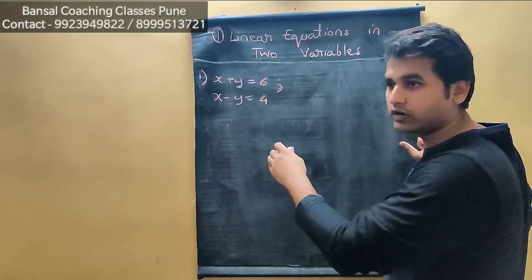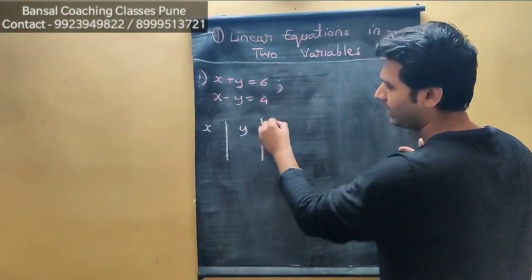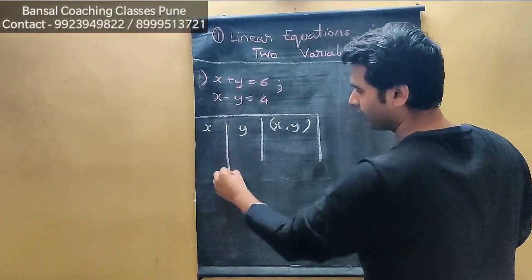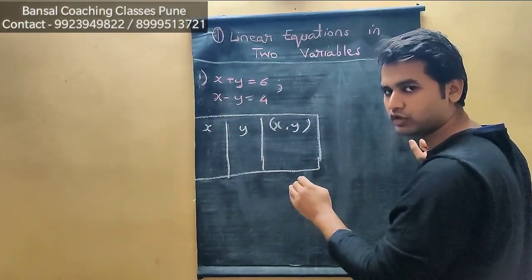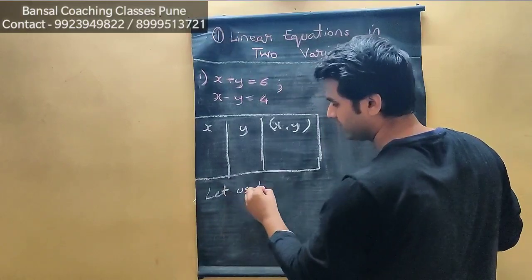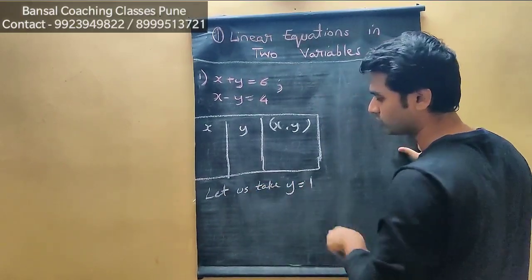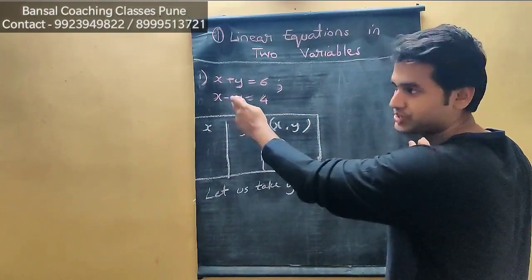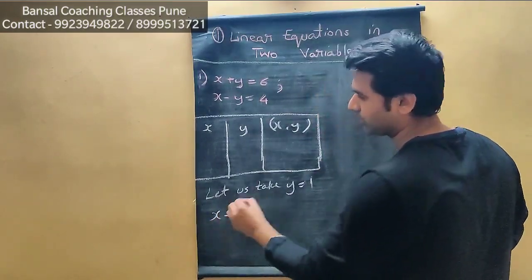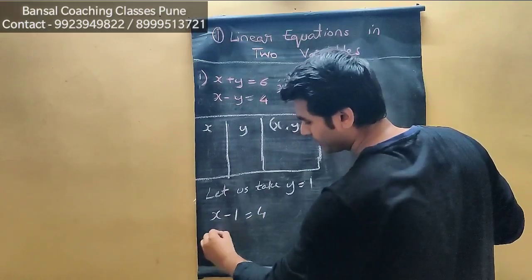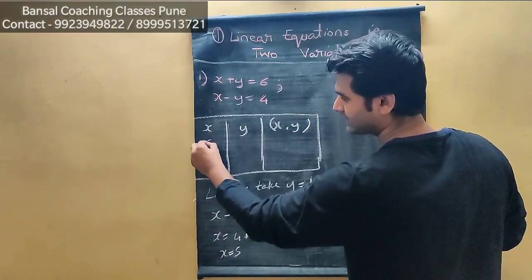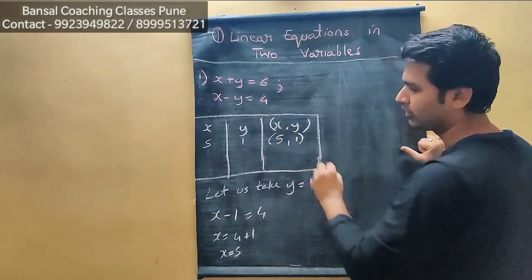Just like we solved the first equation, we'll prepare the same table for the second equation x minus y equals 4 — columns for x, y. We need to find minimum 3 values. Let us take y is equal to 1. So x minus 1 equals 4, therefore x equals 4 plus 1, x equals 5. So when y is 1, x is 5 — point (5, 1).